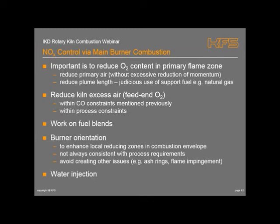If you cut back on O2 on the feed end, you can suppress NOx but you can start hitting CO spikes and other process constraints. You can look at blending your fuels to get fuels with less NOx-generating capabilities — natural gas has no nitrogen in it, so it won't produce any fuel NOx, and that can help. Burner orientation and setup can also be used to minimize NOx by creating some localized reducing zones, but it can produce inconsistencies in kiln operation and lead to ash rings. Flame impingement and orientation needs to be carefully considered when looking at NOx reduction techniques.